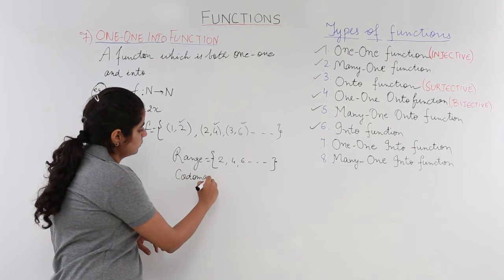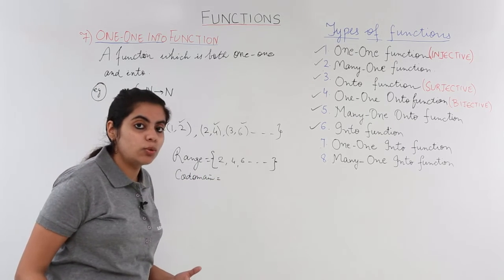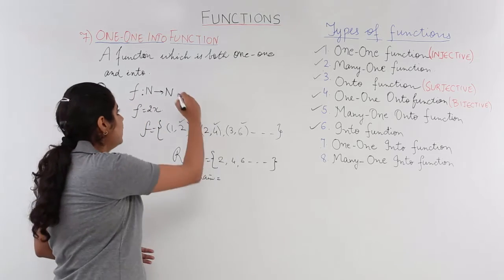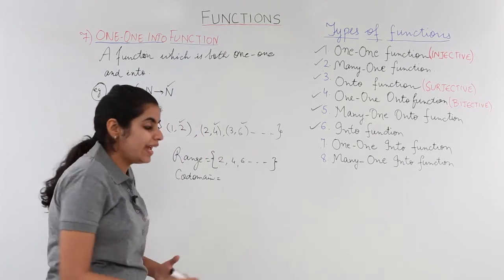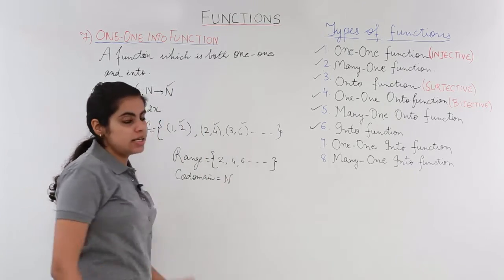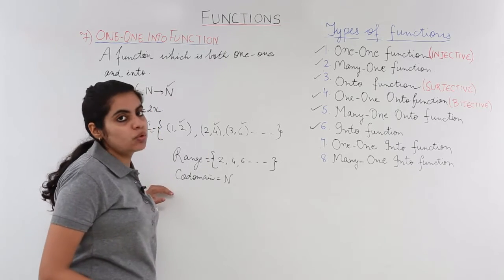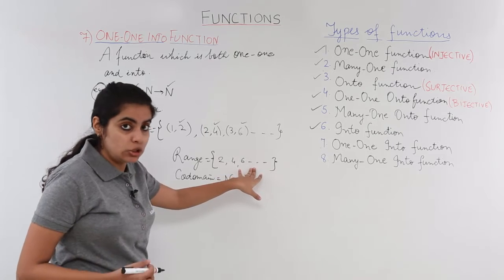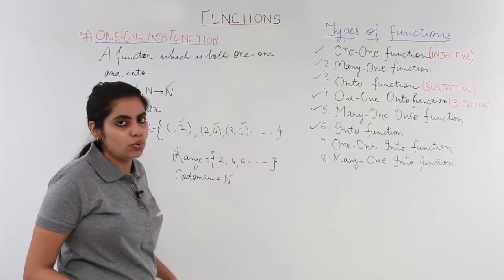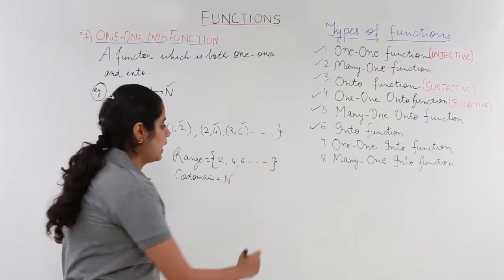While the codomain—what was the codomain? The codomain was what we mapped to, N, that is natural numbers. Now we clearly see that range is a subset of codomain. Range is not equal to but less than the codomain.